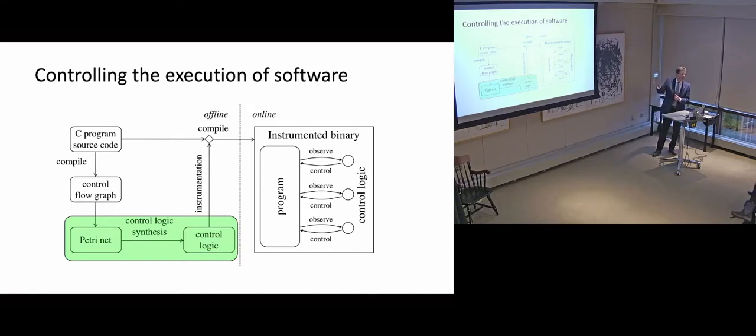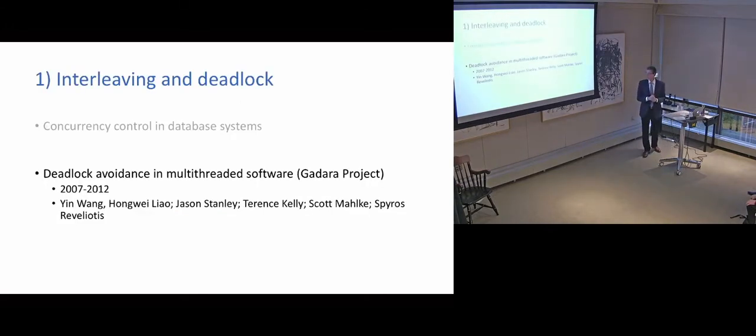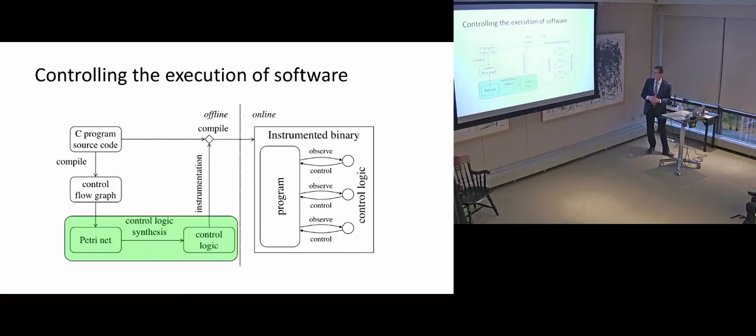So what we did was to take the program source code and actually build at compile time a model of that source code, which we use for that the modeling formalism of Petri Nets, which is another modeling formalism in addition to automata in discrete event systems. And the idea is that once we had that model, then we could do our analysis using the techniques that we knew. So here again, I went to get and ask an expert to help or two experts. First, we teamed up with Scott Malky of the computer science and engineering division here, who is a compiler expert. And then we also sought the help of Spiros Revegliotis of Georgia Tech, who is an expert in deadlock avoidance problem in automated systems, in particular in the Petri Net formalism that we were using.